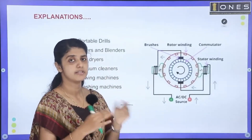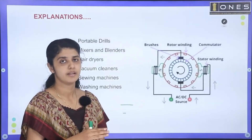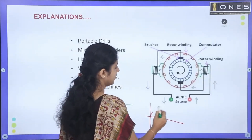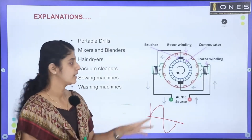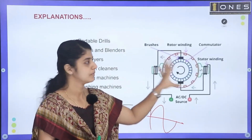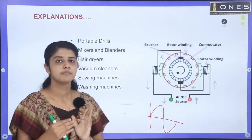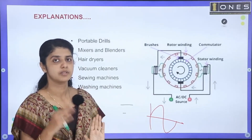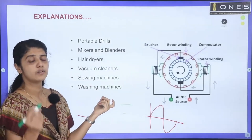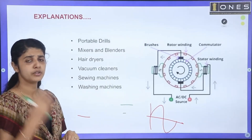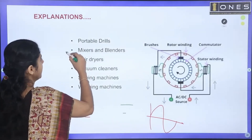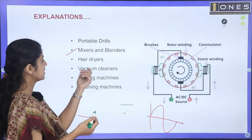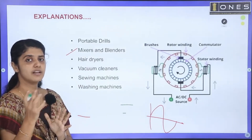Whether AC or DC, the torque is unidirectional — that is the advantage of the universal motor due to the direction of current. In the AC half-cycle, the torque remains unidirectional. Applications of the universal motor include mixers, blenders, vacuum cleaners, and hair dryers.